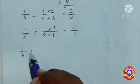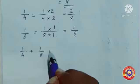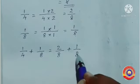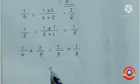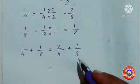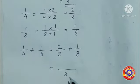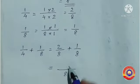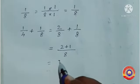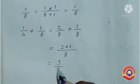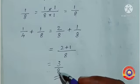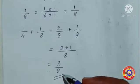Now 1 by 4 plus 1 by 8 is equal to 2 by 8 plus 1 by 8. Write the denominator as it is, that is 8. Then add the numerators: 2 plus 1 is equal to 3. The denominator is 8. Since 3 and 8 are already in the lowest form, the answer is 3 by 8. Is it clear for you?